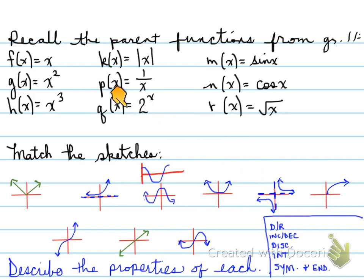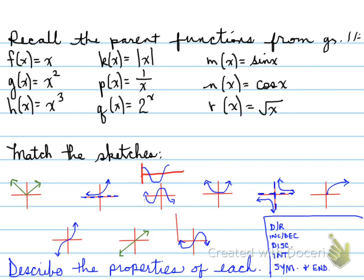We have the exponential function, which has one asymptote — it's a horizontal asymptote. We have the sine function, which is this one. Now, if you remember, we had a basic function that looked like the following: the graph started at 0, 0 and moved and came back up like that. Another example is the 1 down here. So these both represent the sine function.